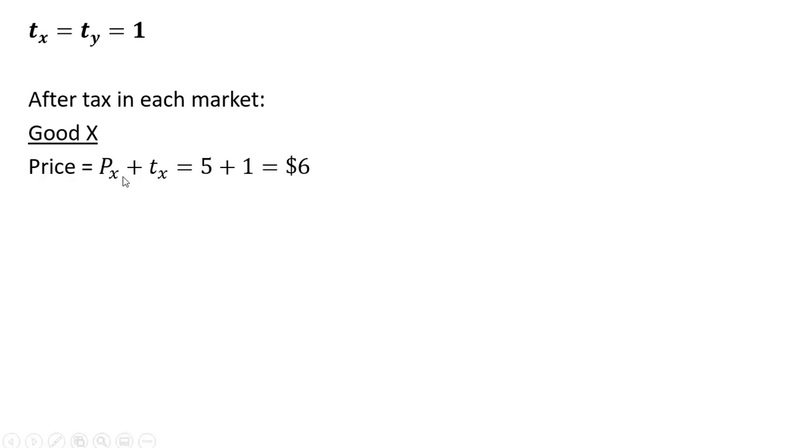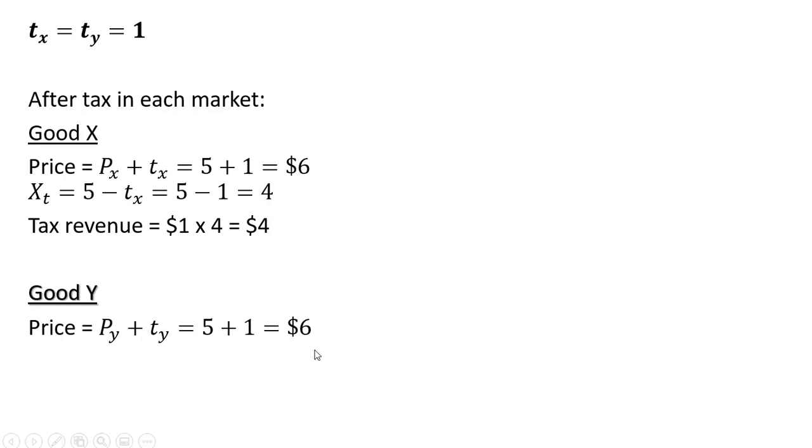All right, so let's see what happens now. In the market for good X, the price with the tax will be six dollars. Consumers will buy four units. Tax revenue is four dollars, one dollar tax times the number of units purchased. And for good Y, a similar thing. Tax revenue raised in the market for good Y is four dollars. So overall, the total government revenue is eight dollars. Okay, that's it. I hope you found this video helpful.